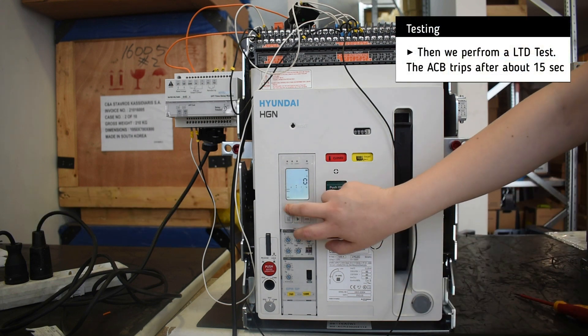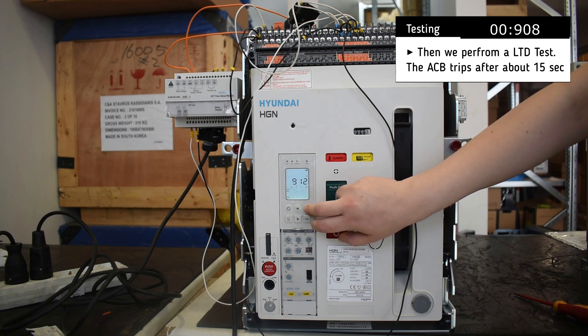Then we perform a long time delay test, and we see that the breaker trips after about 15 seconds.